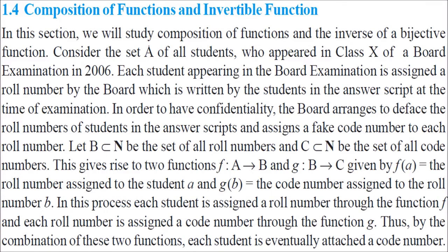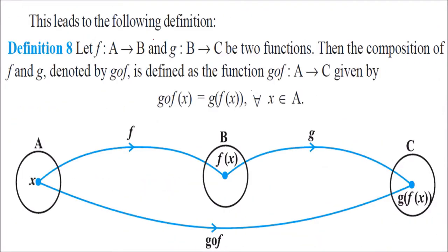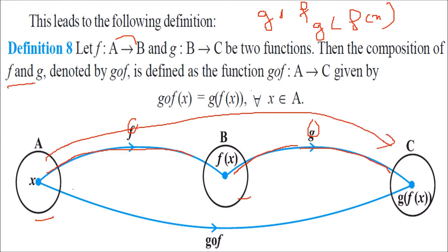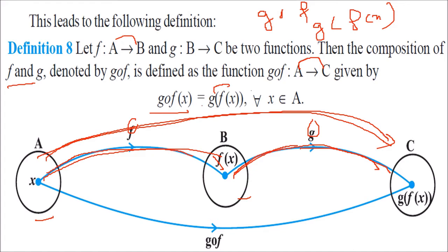Composition of functions and invertible functions: if f is a function from A to B and g is a function from B to C, then the composition gof is nothing but g(f(x)), which is a function from A to C. So gof(x) = g(f(x)) for all x belonging to A.